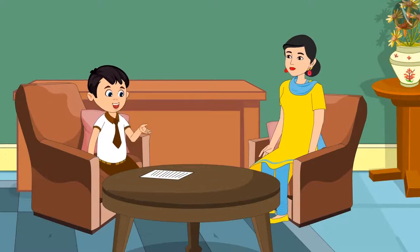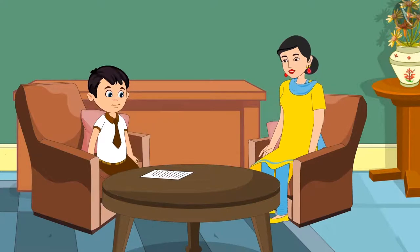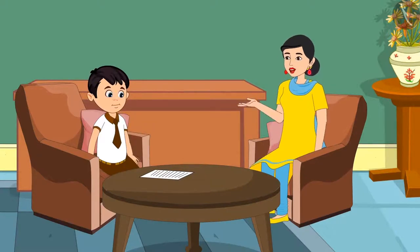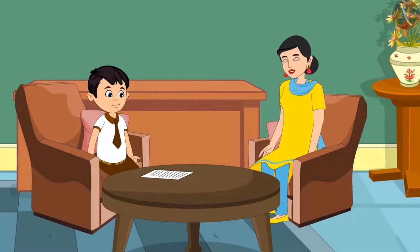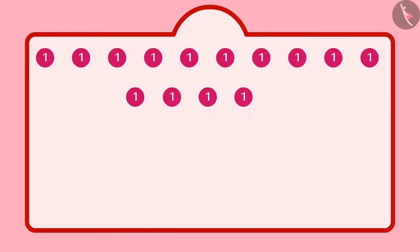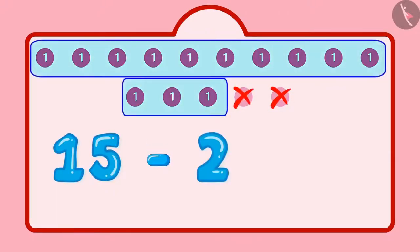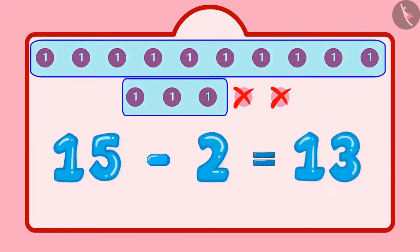Now tell me how many mistakes you made in the paper. Mommy, only two mistakes. Two mistakes means two marks less. Chotu, if you subtract two marks from 15 marks then you will know how many marks you actually got. The paper was of 15 marks in total, then I subtracted two marks from it. Mommy, I got 13 marks in total! Well done, very good Chotu!